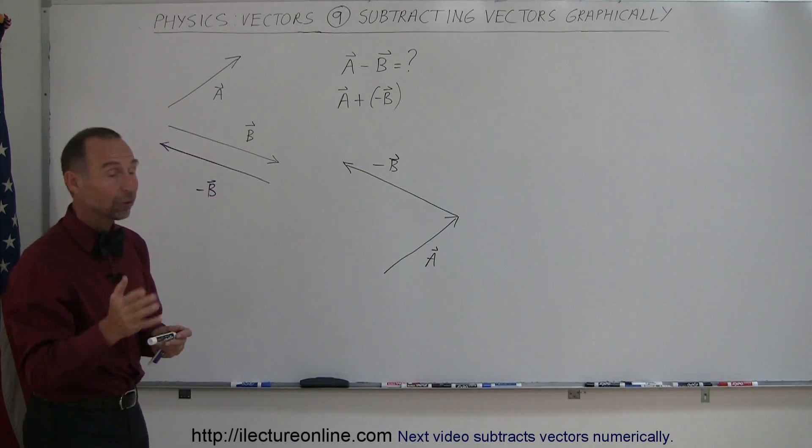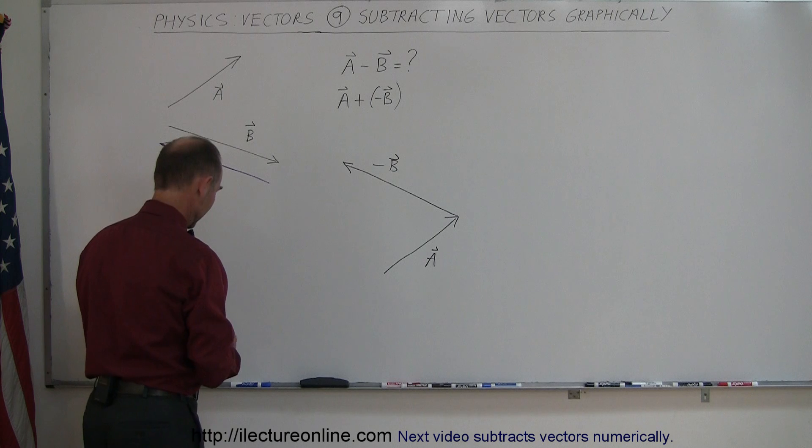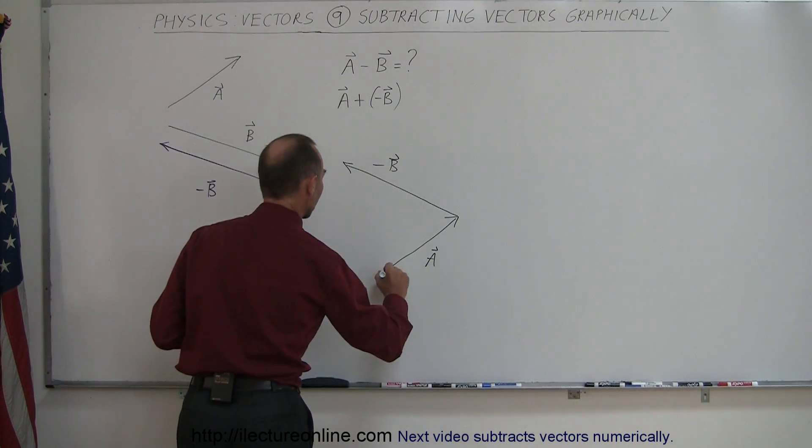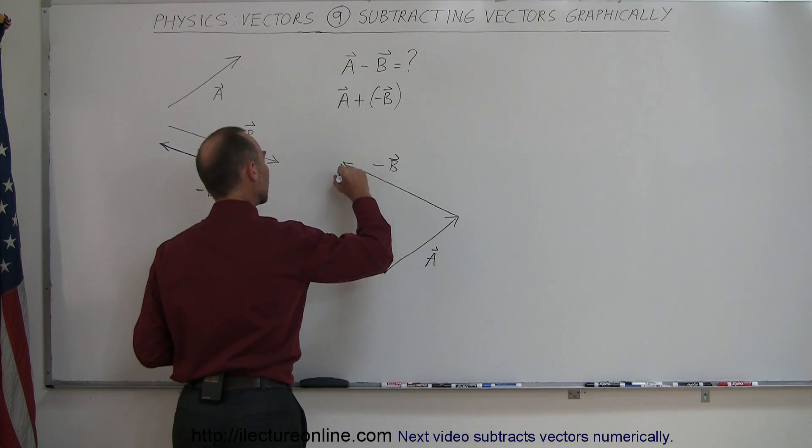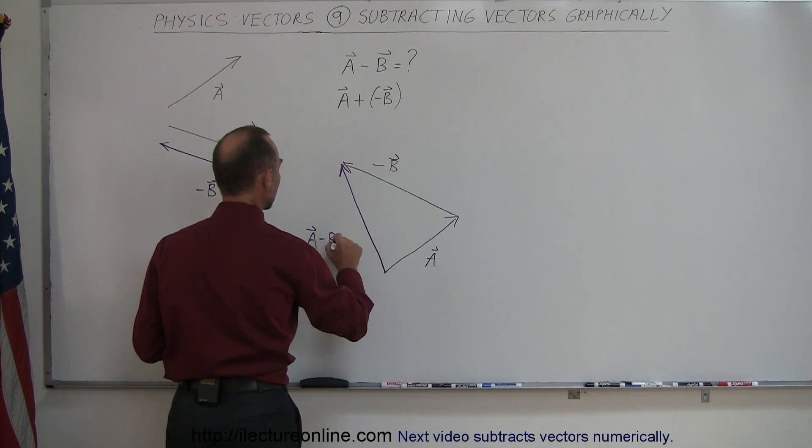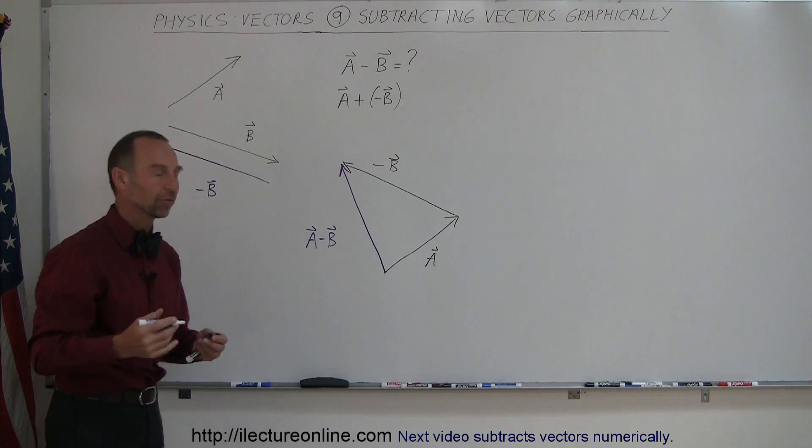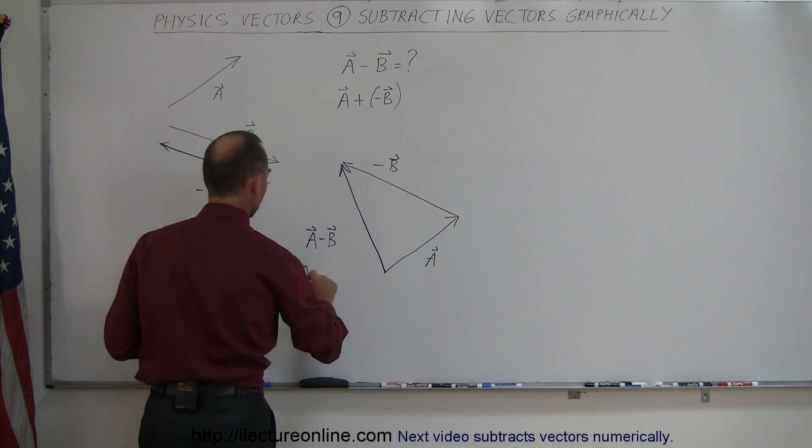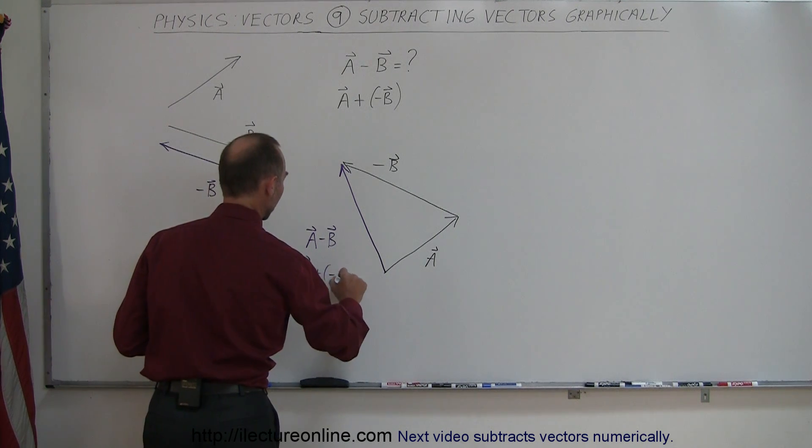And so now I know that when I add those two together, I get the resultant. So this here is my vector A minus B, or A plus the negative B vector.